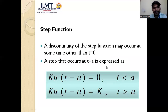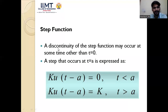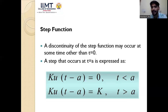The discontinuity of the step function may occur at a time other than t = 0. At t = 0 there is a jump from 0 to k — a discontinuity. This discontinuity can occur at a different time instant when we apply the shifting property to the signal.